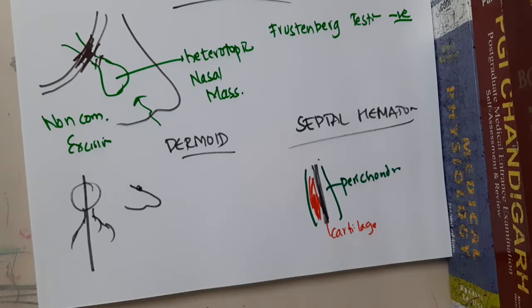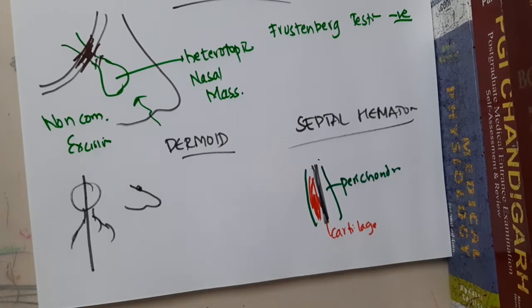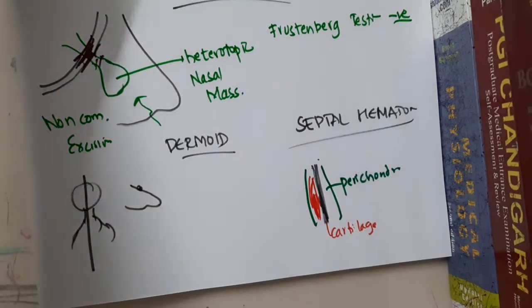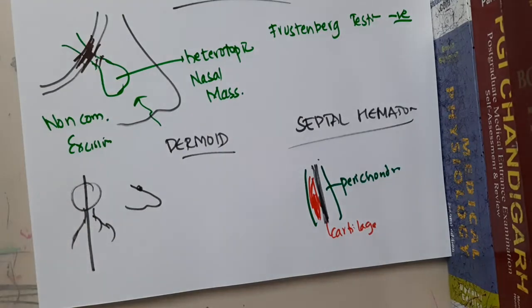In septal hematoma, the first cause is trauma. But if asked what is the most common cause, it is iatrogenic — that is, caused by surgery.